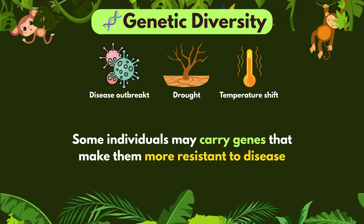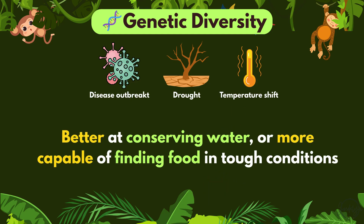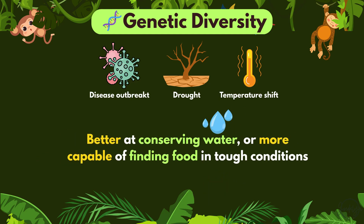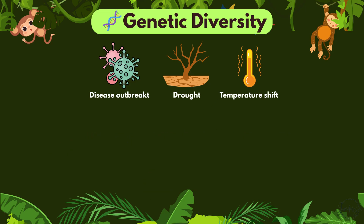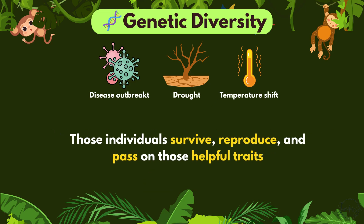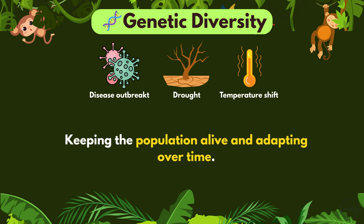Some individuals may carry genes that make them more resistant to disease, better at conserving water, or more capable of finding food in tough conditions. Those individuals survive, reproduce, and pass on those helpful traits, keeping the population alive and adapting over time.